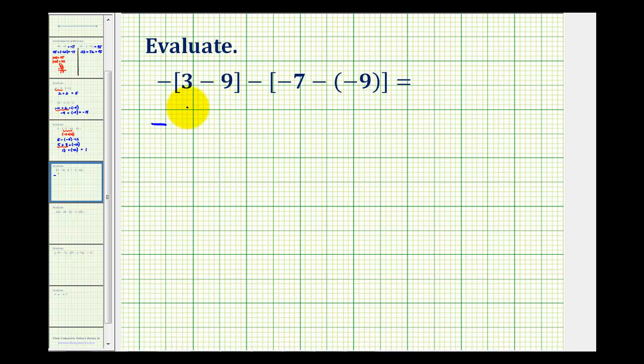So we're going to rewrite 3 minus positive 9 as 3 plus negative 9. And we'll rewrite negative 7 minus negative 9 as negative 7 plus positive 9.